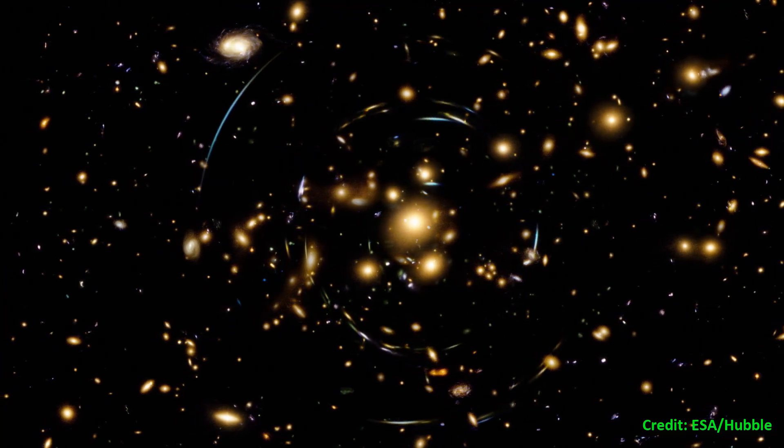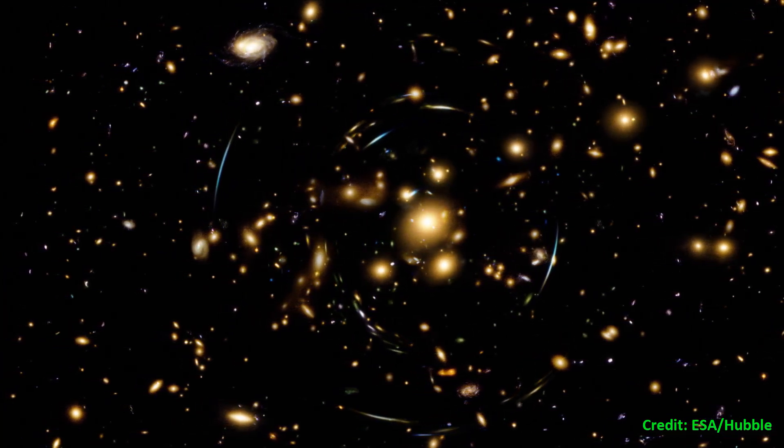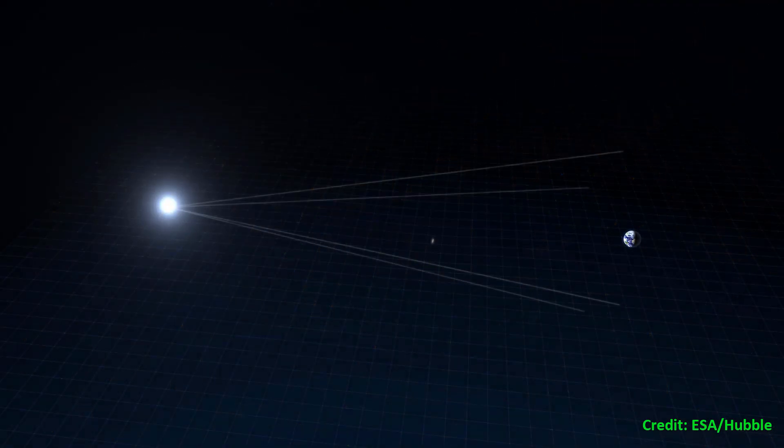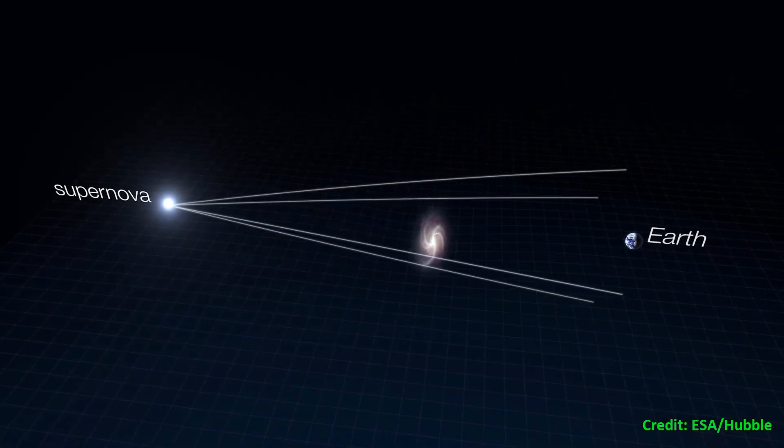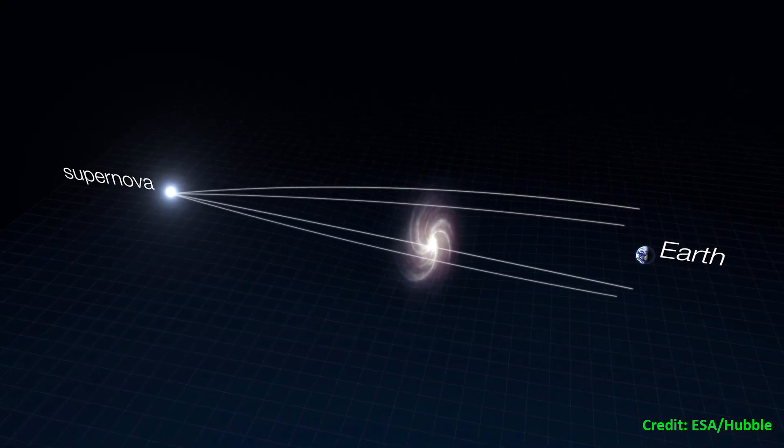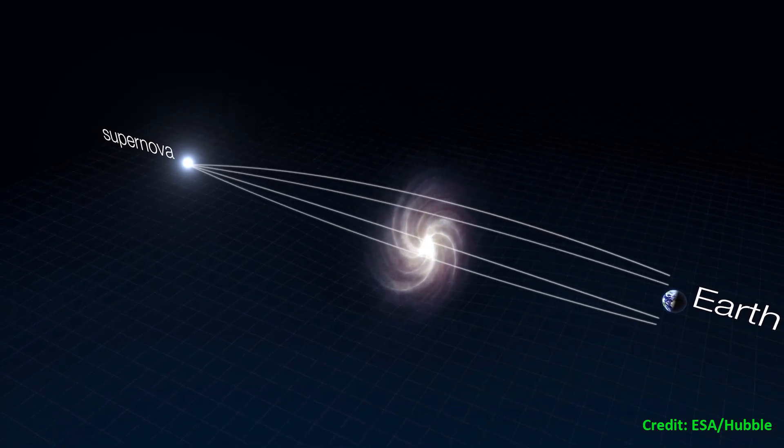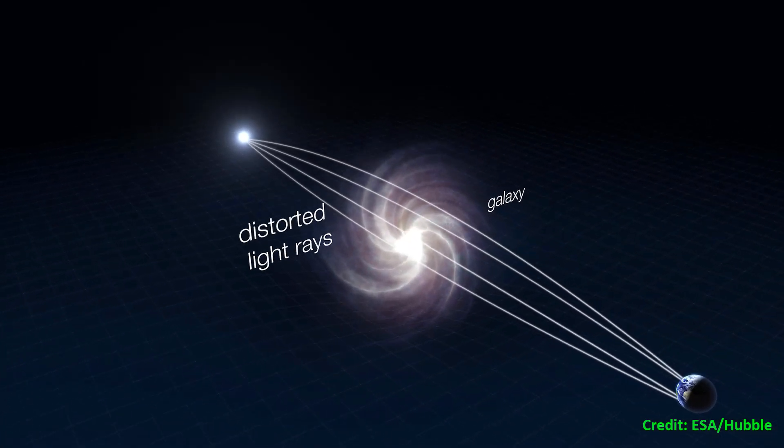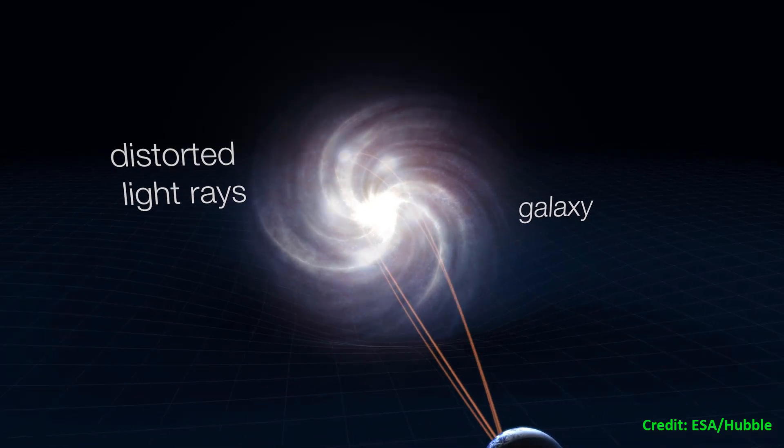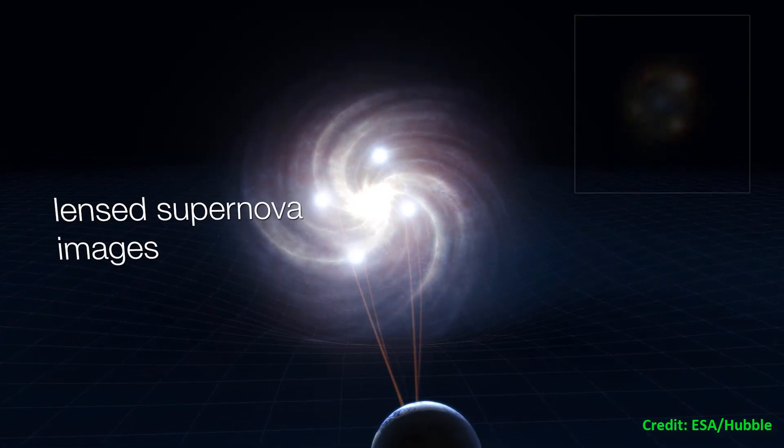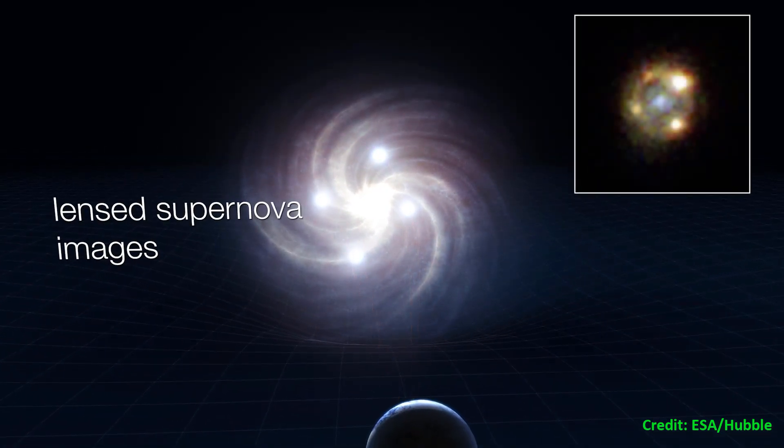Gravitational lensing is a phenomenon created by extremely concentrated masses, like the cores of galaxies or galaxy clusters. Their strong gravity warps the surrounding space, and light from distant objects traveling through that warped space is curved away from its straight-line path as if passing through a lens.